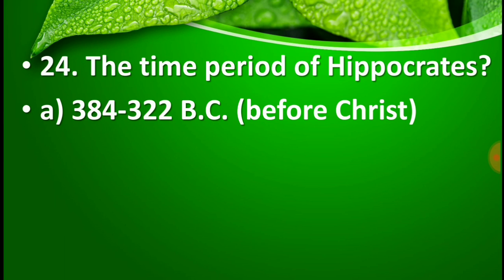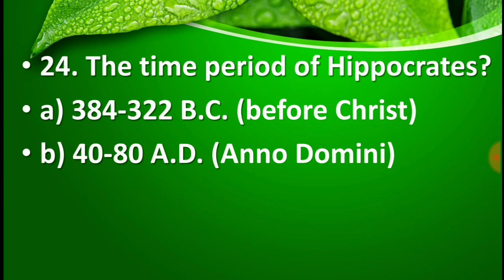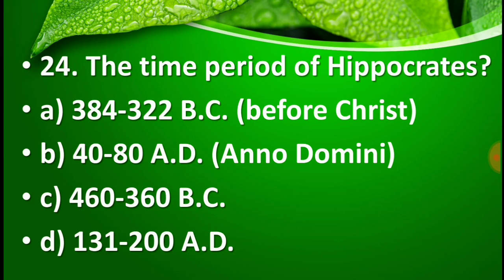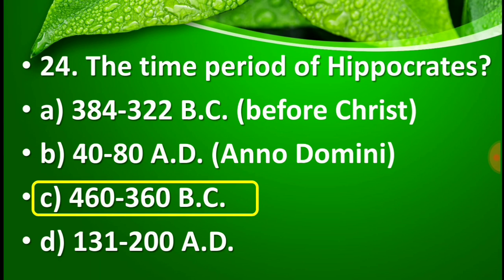Question number 24: The time period of Hippocrates is — option A: 384 to 320 BC, option B: 40 to 80 AD, option C: 460 to 360 BC, and option D: 131 to 200 AD. The right answer is option C — 460 to 360 BC. The time period of Hippocrates is 462 to 360 before Christ.